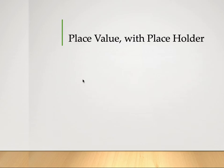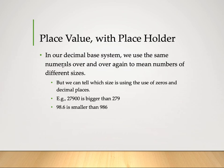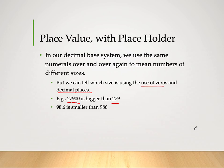In our decimal base system we use the same numerals over and over again to represent numbers of different sizes, and we can tell which size by using zeros and decimal places. For instance, 27,900 is bigger than 279 because of the two zeros added. For example, 98.6 is smaller than 986 — that distinction is made using the decimal point. So we can tell which is bigger in size and magnitude.